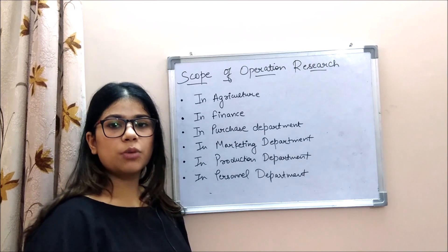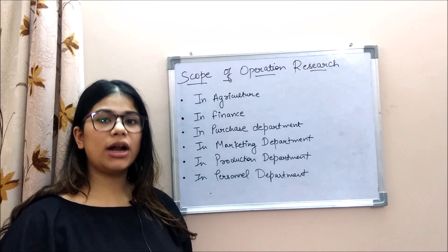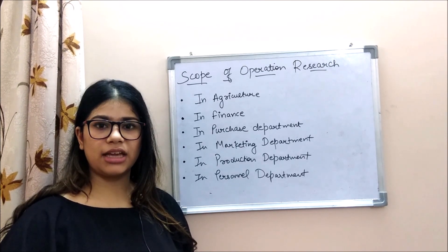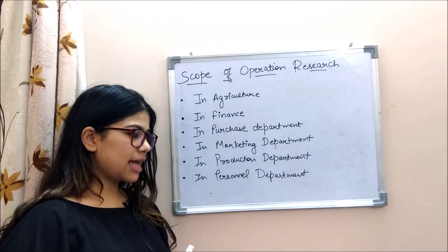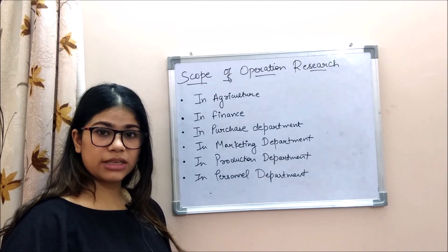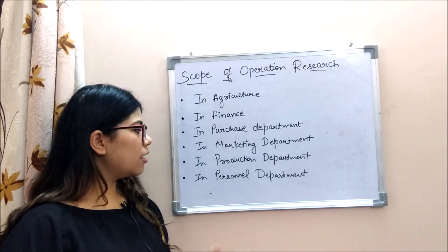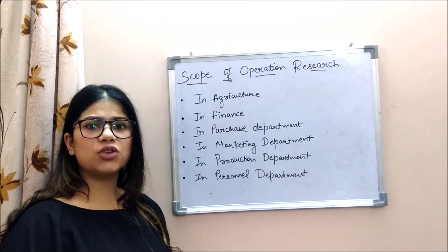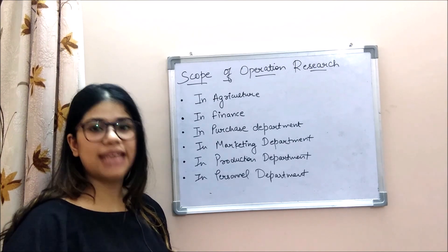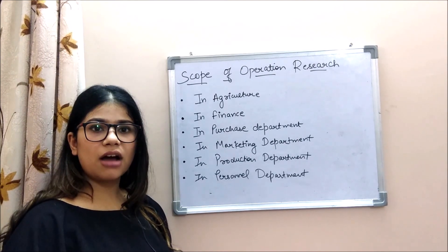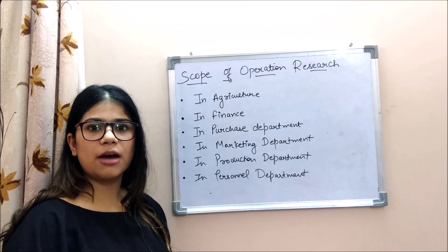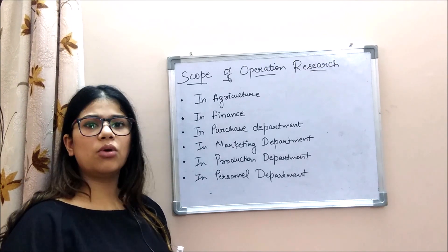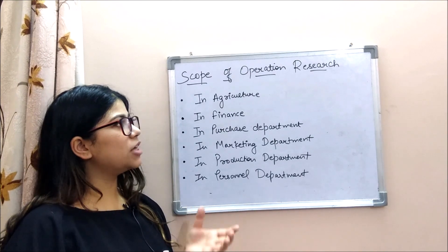The next scope is the production department. Production managers use OR techniques to determine what to manufacture, what size of products, and how to sell them. OR also helps in designing production sites, choosing locations, and managing raw materials and transportation costs.